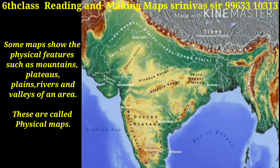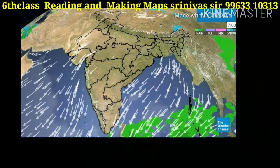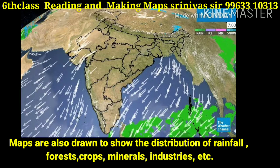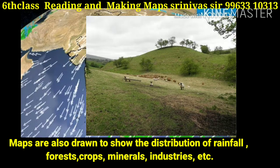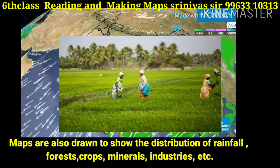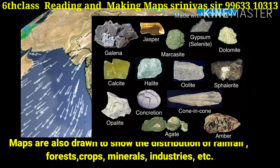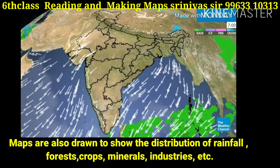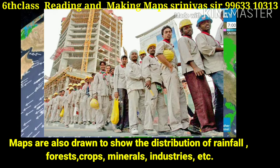Some maps show physical features such as mountains, plateaus, plains, rivers, and valleys of an area — these are called physical maps. Maps are also drawn to show the distribution of rainfall, forests, crops, minerals, industries, etc.